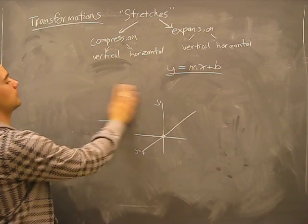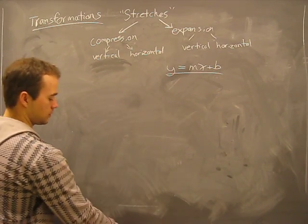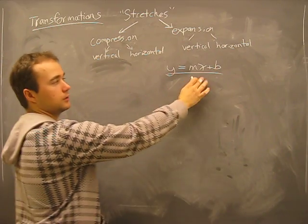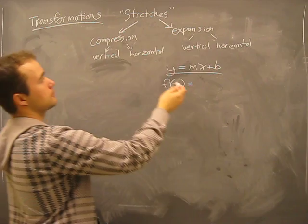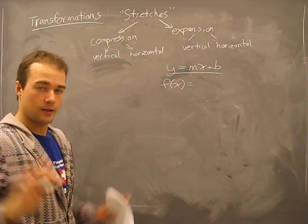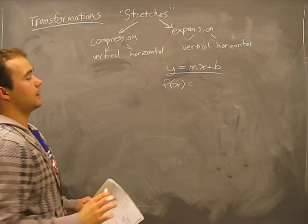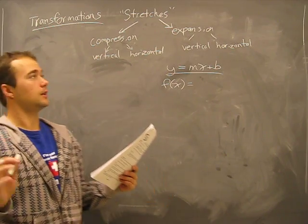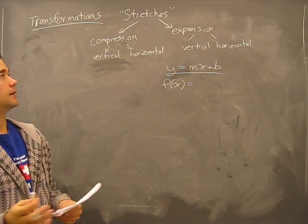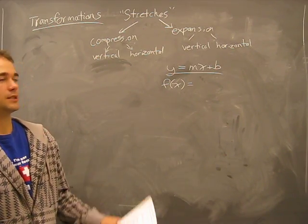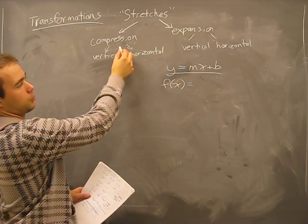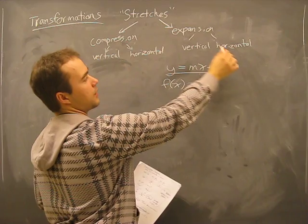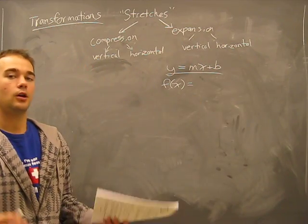Now what are all these words on the board? This is part of transformations. You can have a function, it can be stretched. You can stretch something in two ways: it can be called compression or an expansion. Within a compression, you can have vertical compression or horizontal compression, vertical expansion or horizontal expansion.